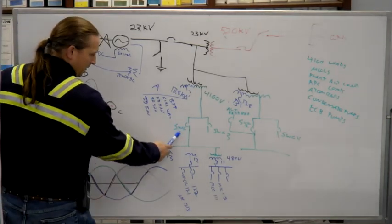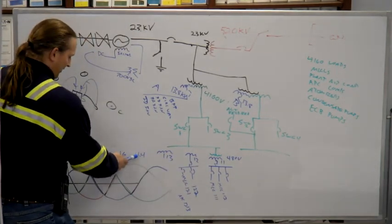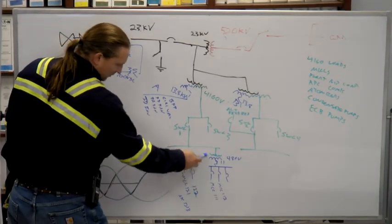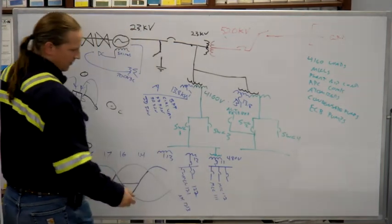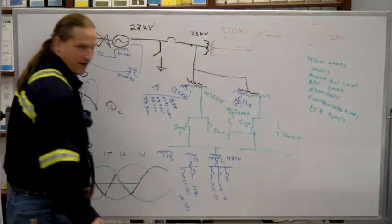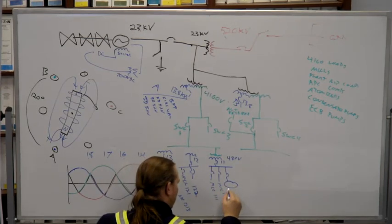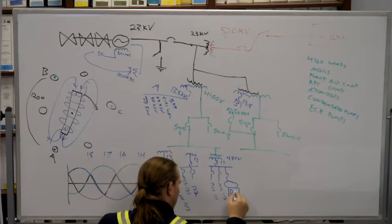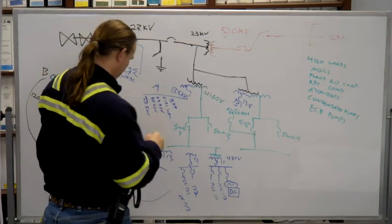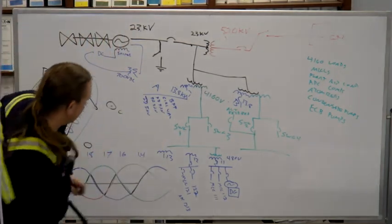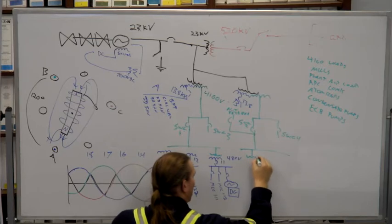So switch gear one, these transformers 11, 12, 13, 14, 16, 17, 18. Transformer 11 goes to MCC 111, 112, and there's something else that ties in on that one. Does anybody know what that is? Standby diesel generator. Correct.